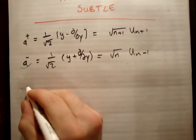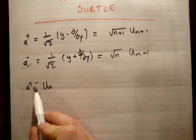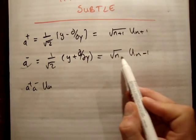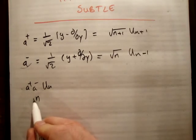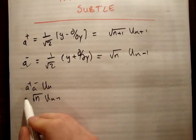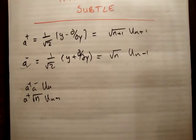So I'm going to do A+ A- onto un. So A-, it roots it and then lowers it. So it roots un, so we get root n, and then we get un minus 1, and we have a plus. But we know that A+ raises it and then roots it.